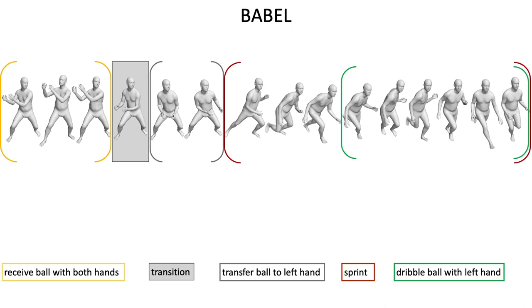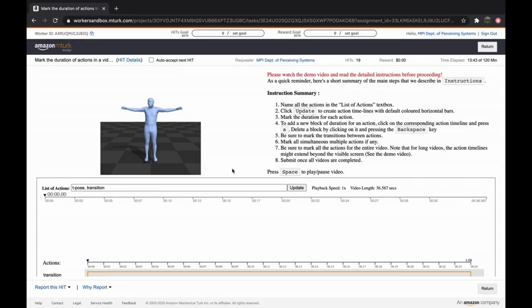Each action label in Babel is precisely aligned with the frames depicting the action. This includes simultaneous actions and transitions between actions.